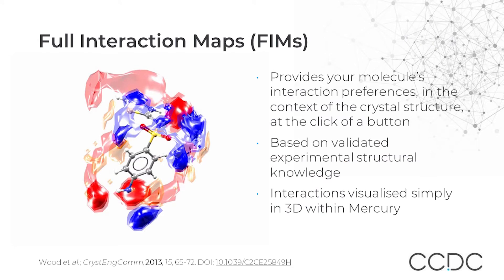Full interaction maps show the interaction preferences of all the functional groups in your molecule at the click of a button, based on the data distilled from the CSD. It allows you to assess whether the interaction preferences of your functional groups are satisfied by an actual interaction in your crystal structure, which may suggest something about the stability of your structure, and if you have more than one crystal form, which could be more stable. Additional details on the exact methodology and the idea behind FIMs is linked in the paper below.